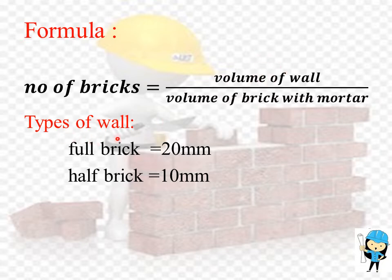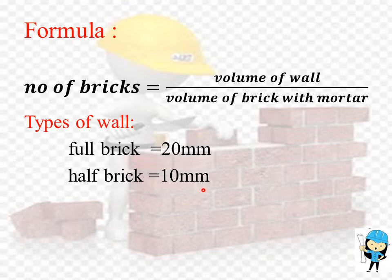There are two types of wall. One is full brick wall and another is half brick wall. The thickness of the full brick wall is 200 mm, and the thickness of the half brick wall is 100 mm.